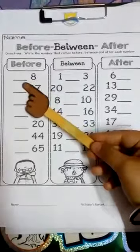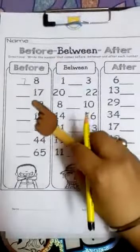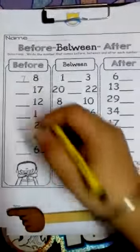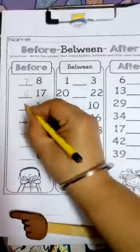Here we have to write before numbers. So let's start. What comes before 8? Yes, you write 7. So let's write here 7. What comes before 17? Yes, you write 16.